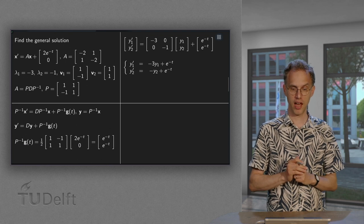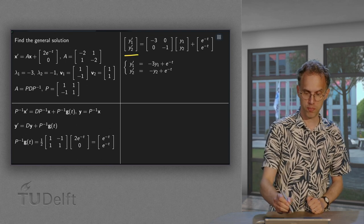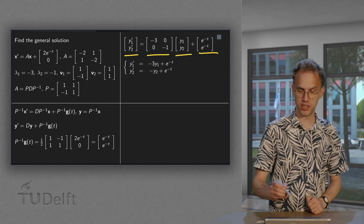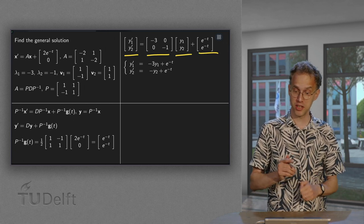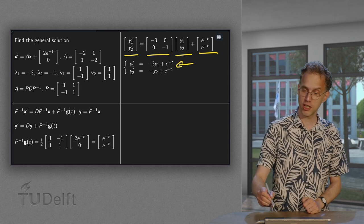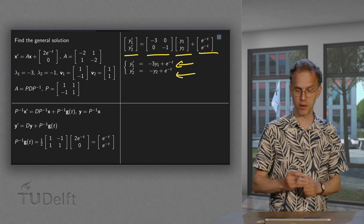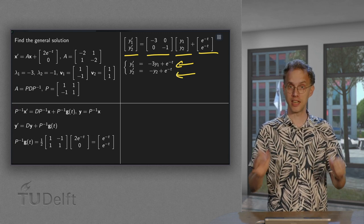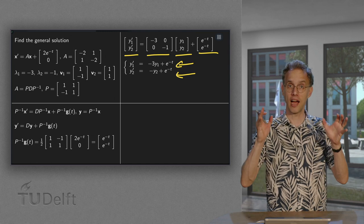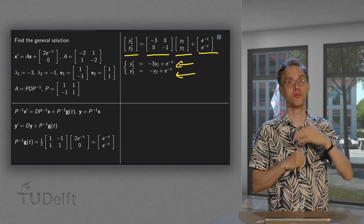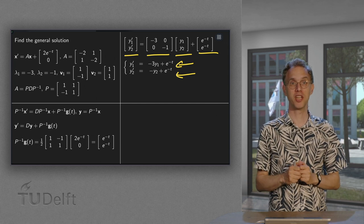Now, what do we have? y1 prime, y2 prime equals D times y1, y2 plus P inverse times g. So now we are decoupled. We have y prime equals minus 3 times y1 plus e to the power minus t, and y2 prime equals minus y2 plus e to the power minus t. So, end of the first step. We now have two decoupled equations, one for y1 and one for y2.